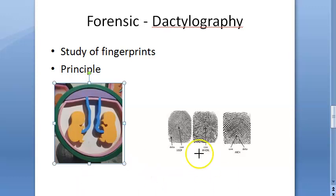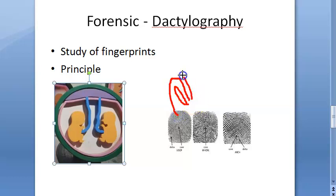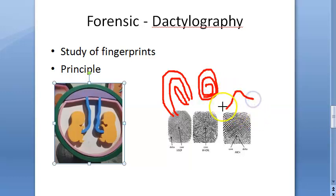There are three types of patterns: the loop pattern, the whirl pattern, and the arch pattern. There is also a composite pattern which combines all the patterns. Fingerprints don't change throughout life — they are permanent — but they can change because of some diseases.